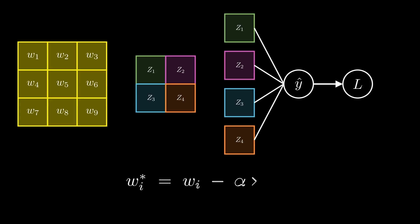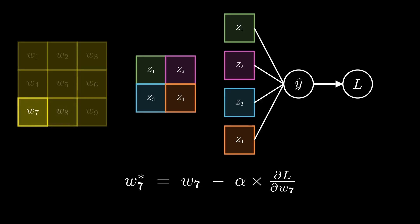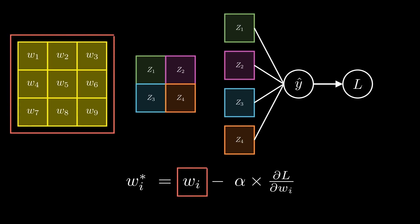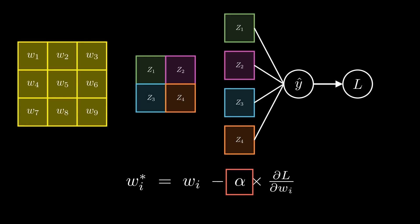In order to update the weights, we will use this formula. Here, the updated weights are denoted with an asterisk. The i simply means that for a given i value in the range from 1 to 9, the formula would change accordingly. For example, when i is equal to 8, the updated w8 can be calculated by subtracting the learning rate alpha multiplied with the partial derivative of the loss with respect to w8 from the original w8. Wi is just the kernel, and the learning rate alpha is the constant we choose ourselves.